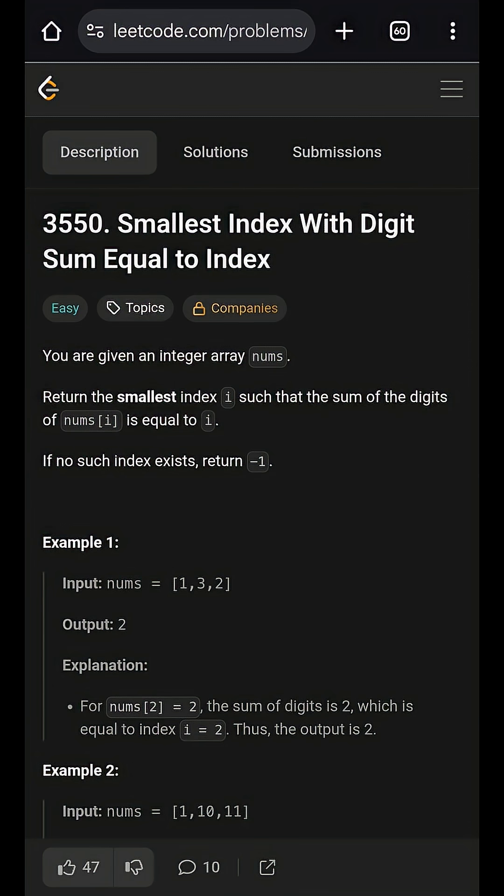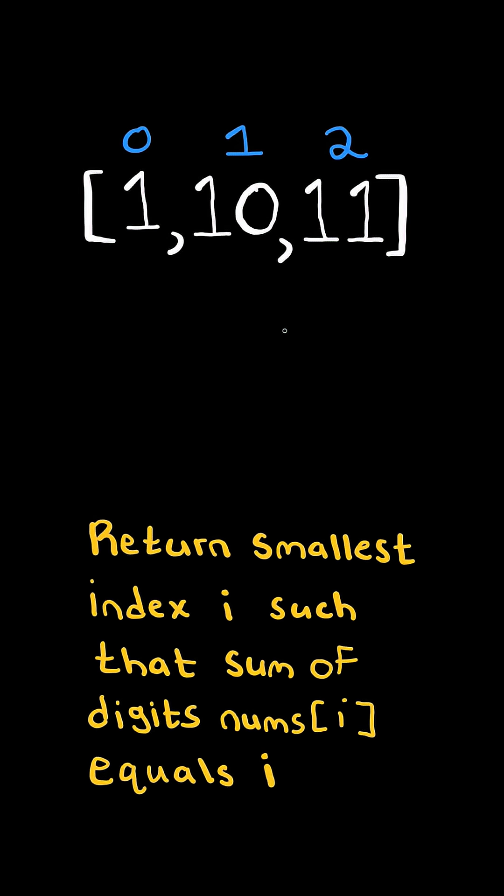Smallest index with digit sum equal to index. Given a list of integers, consider the indices of the integers. Return the smallest index i such that the sum of the digits of nums[i] equals i.